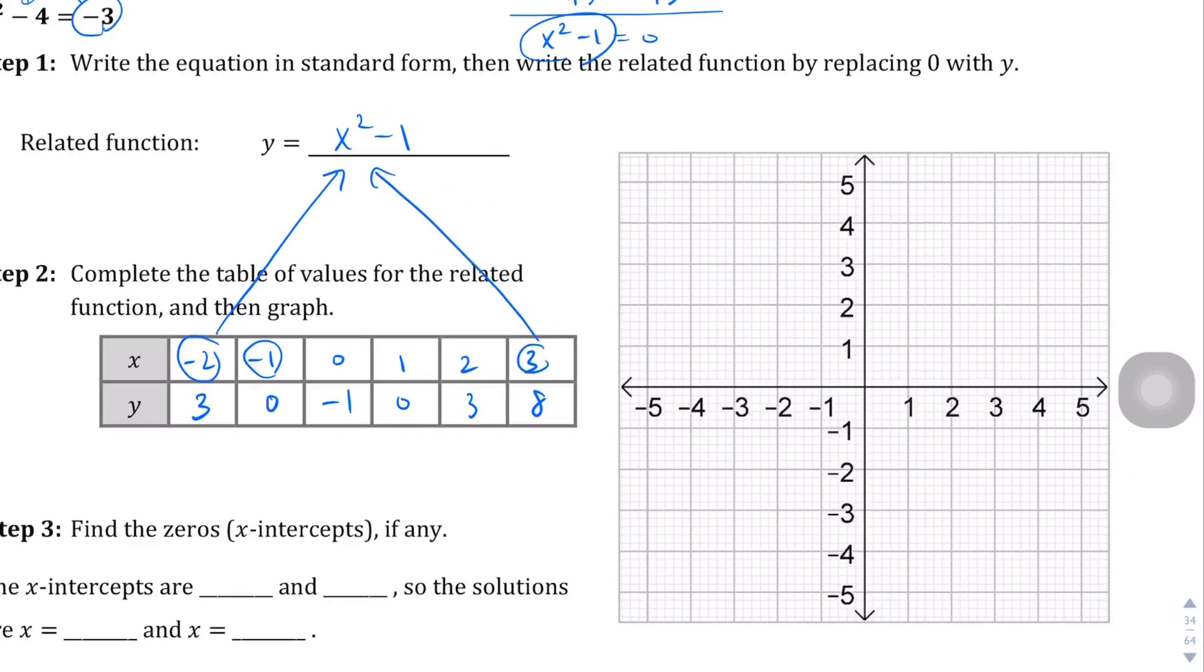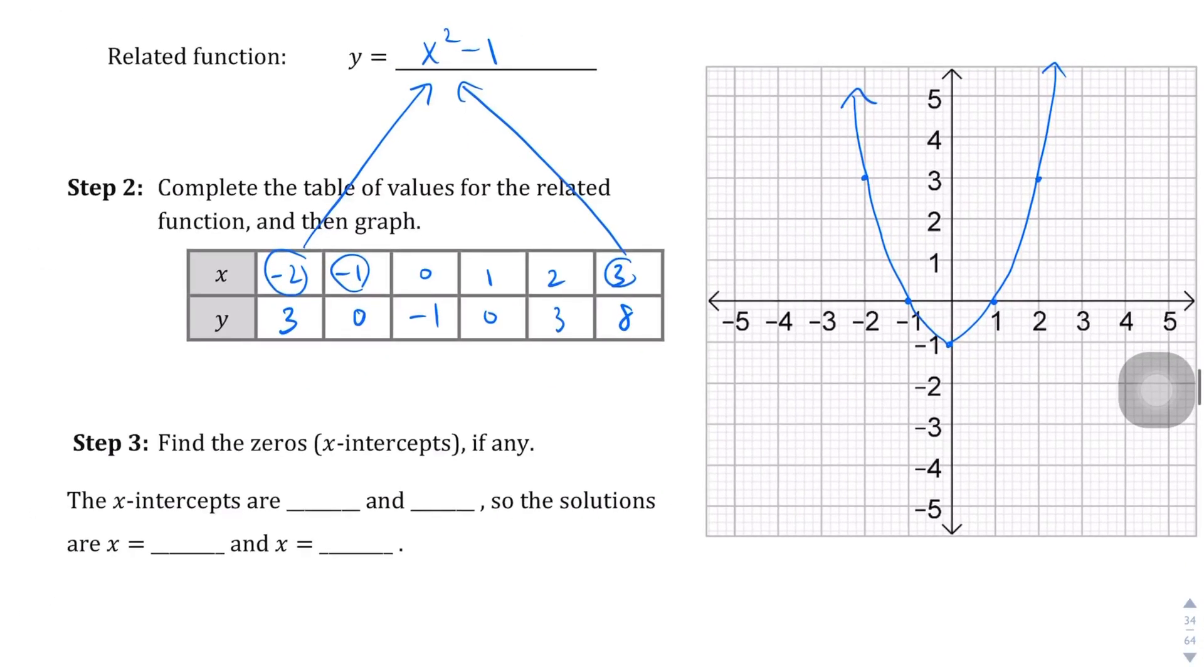Let's graph this. When x is negative 2, it's 3. When x is negative 1, it's 0. When x is 0, we're at negative 1. And again, symmetrical like this. And then 3 is going to go all the way to 8, and that's off the graph, so we're not going to actually do that. Let's draw something like that.